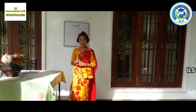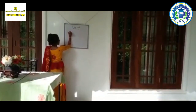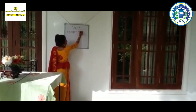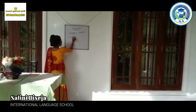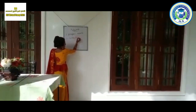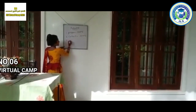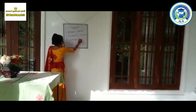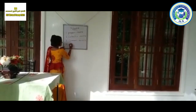Okay, we can classify noun as four types. First one is proper noun. Second one is collective noun. Third one is common noun. And fourth one is abstract noun.